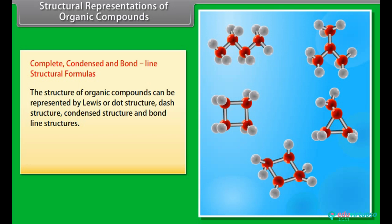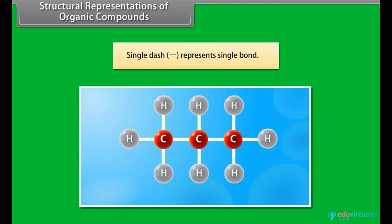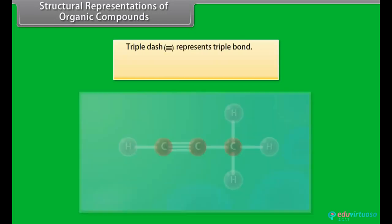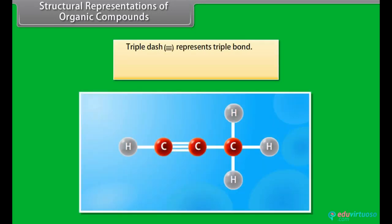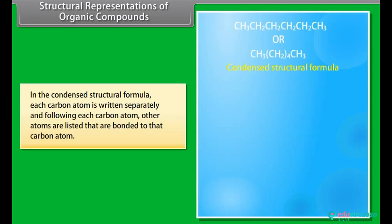Structural representations of organic compounds: complete, condensed, and bond-line structural formulas. The structure of organic compounds can be represented by Lewis or dot structures, dash structures, condensed structures, and bond-line structures. The Lewis or dot structures can be simplified by using dashes: a single dash represents a single bond, for example propane; a double dash represents a double bond, for example propene; a triple dash represents a triple bond, for example propyne. These structural representations are called complete structural formulas.